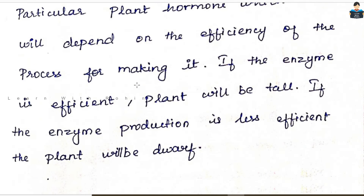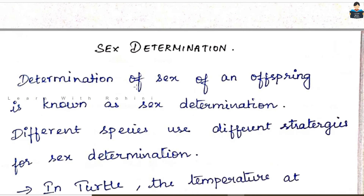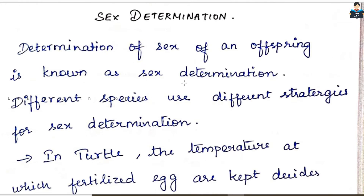Next, let's talk about sex determination in human beings. What is the determination of sex of an offspring — that is, an individual, a child? How does sex determine male or female? This is called sex determination.